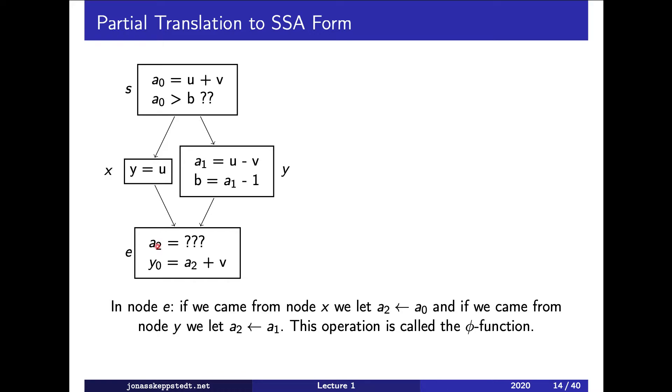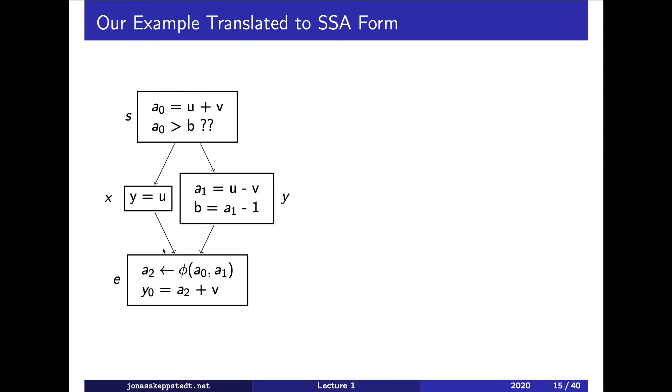And what is done is to have an operator called a phi function, which creates a new version of a. Okay, so what we do is to put this operator here or function, and it has a parameter list with one parameter for each predecessor in the control flow graph.